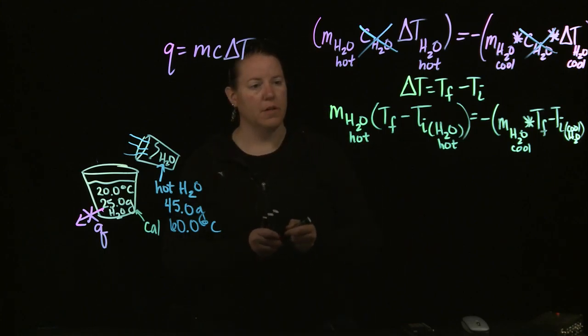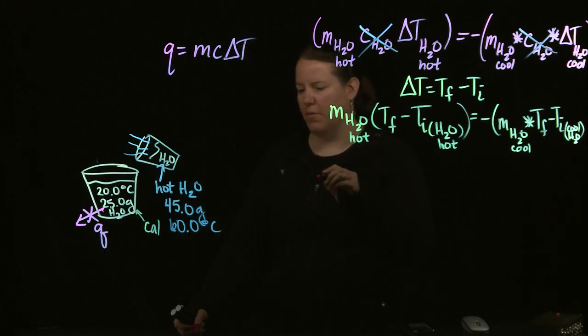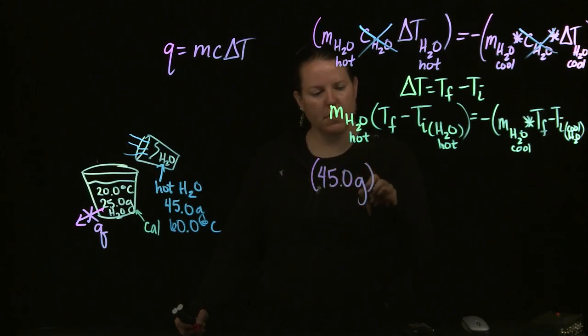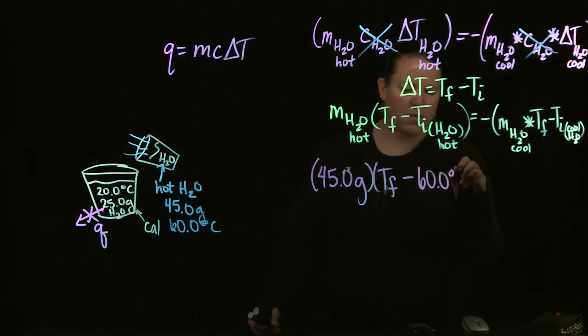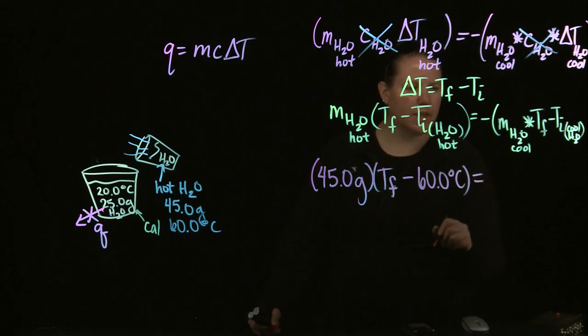Alright, so let's go ahead and put in our numbers. The mass of the water that was hot was 45 grams. T_final is the same. The T_initial of the water that was hot was 60 degrees Celsius.